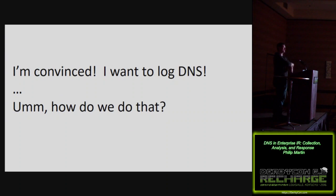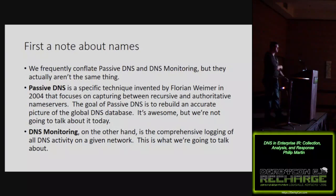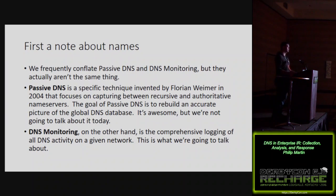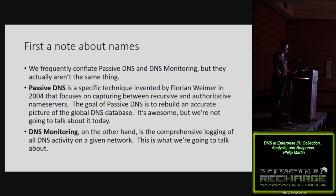A quick note about names — we tend to conflate two terms. Passive DNS is not what you think it is. Passive DNS refers to monitoring between resolvers and authoritative servers. It specifically misses cache data and client IPs. Its point is to rebuild the structure of the global DNS database — that's what Farsight's DNS database is trying to do.